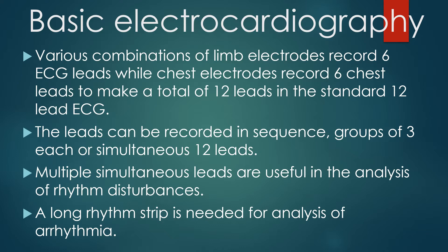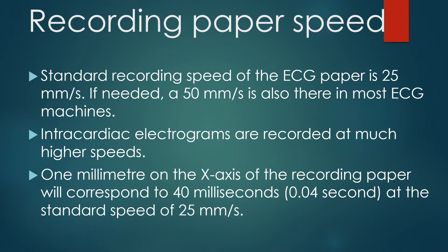The leads can be recorded in sequence, groups of 3 each, or as simultaneous 12 leads. Multiple simultaneous leads are useful in the analysis of rhythm disturbances, and a long rhythm strip is needed for analysis of arrhythmia. Standard recording speed of the ECG paper is 25 mm per second. If needed, a 50 mm per second speed is also available in most ECG machines.